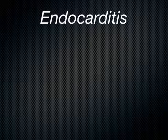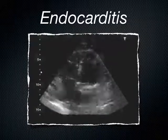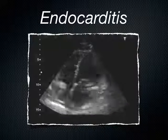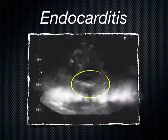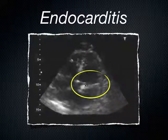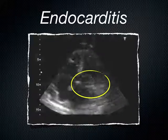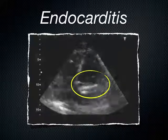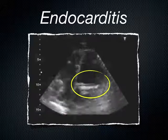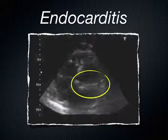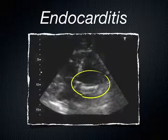Moving on to another cause of fever — endocarditis. Most commonly it involves the tricuspid valve, but occasionally we can see it on the mitral valve. In this case we can see vegetation attached to the mitral valve in an apical four-chamber view. This is a patient with endocarditis — not the greatest example, but we can see the vegetation right here.